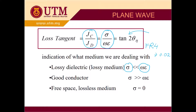For the good conductor — for example, silver, copper, gold, and so on — sigma is very large compared to omega epsilon. Sigma represents how well electrons can move inside the material. Lastly, we have free space and lossless medium, where both cannot conduct electricity, so sigma equals zero.